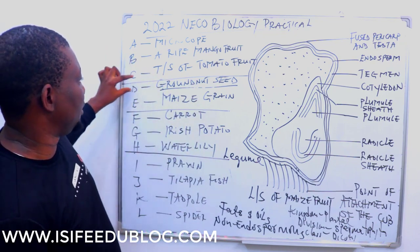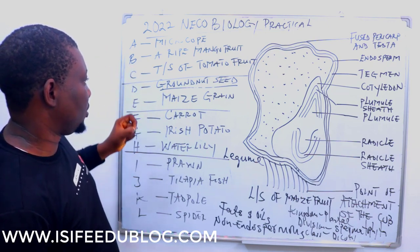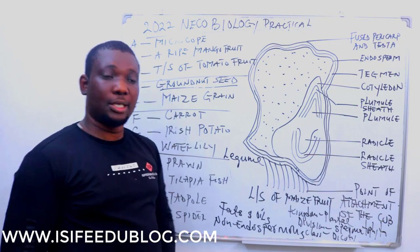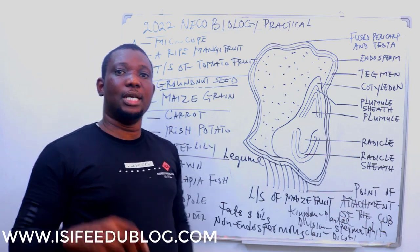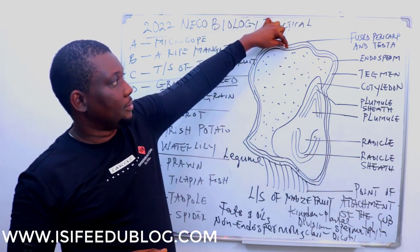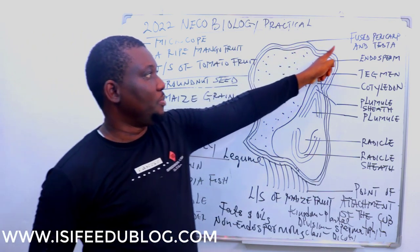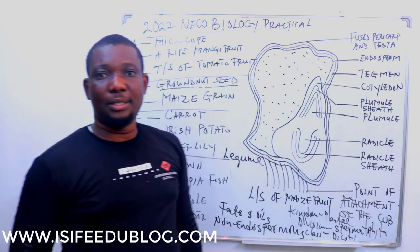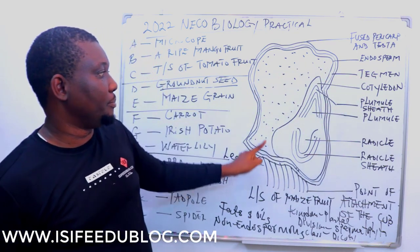We are going to look at the possibility of differentiating specimen D from specimen E, as well as their similarities. Now we go to maize grain. Here is the structure of the longitudinal section of the maize fruit. In your diagram, you must show three layers. The first layer is the testa which is the pericarp, the second layer is the tegmen, and the inner layer is the endosperm.